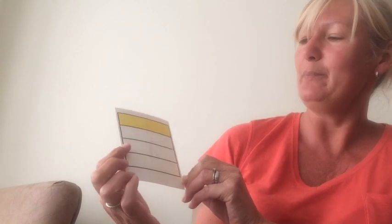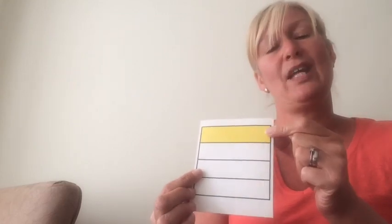What's this fraction then? Hopefully you said it was one quarter. So you've got your shape. It's been cut into four equal pieces but only one of the quarters is yellow.